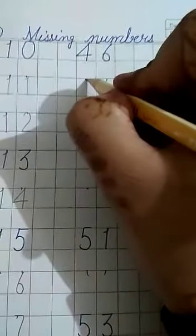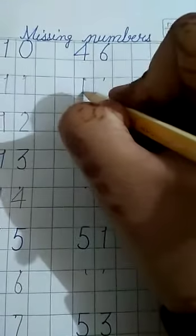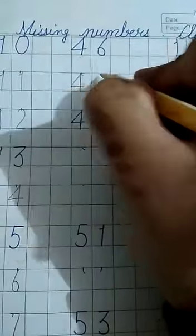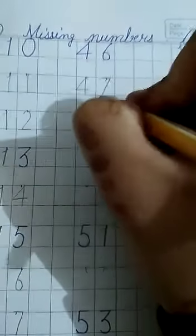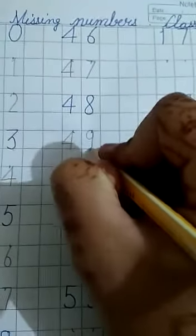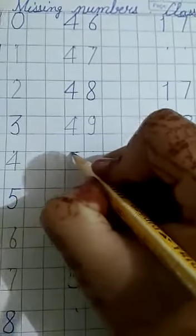47, right here. Next, already written 48. After 48 comes 49, right here. Next, again blank space. After 49 comes 50.